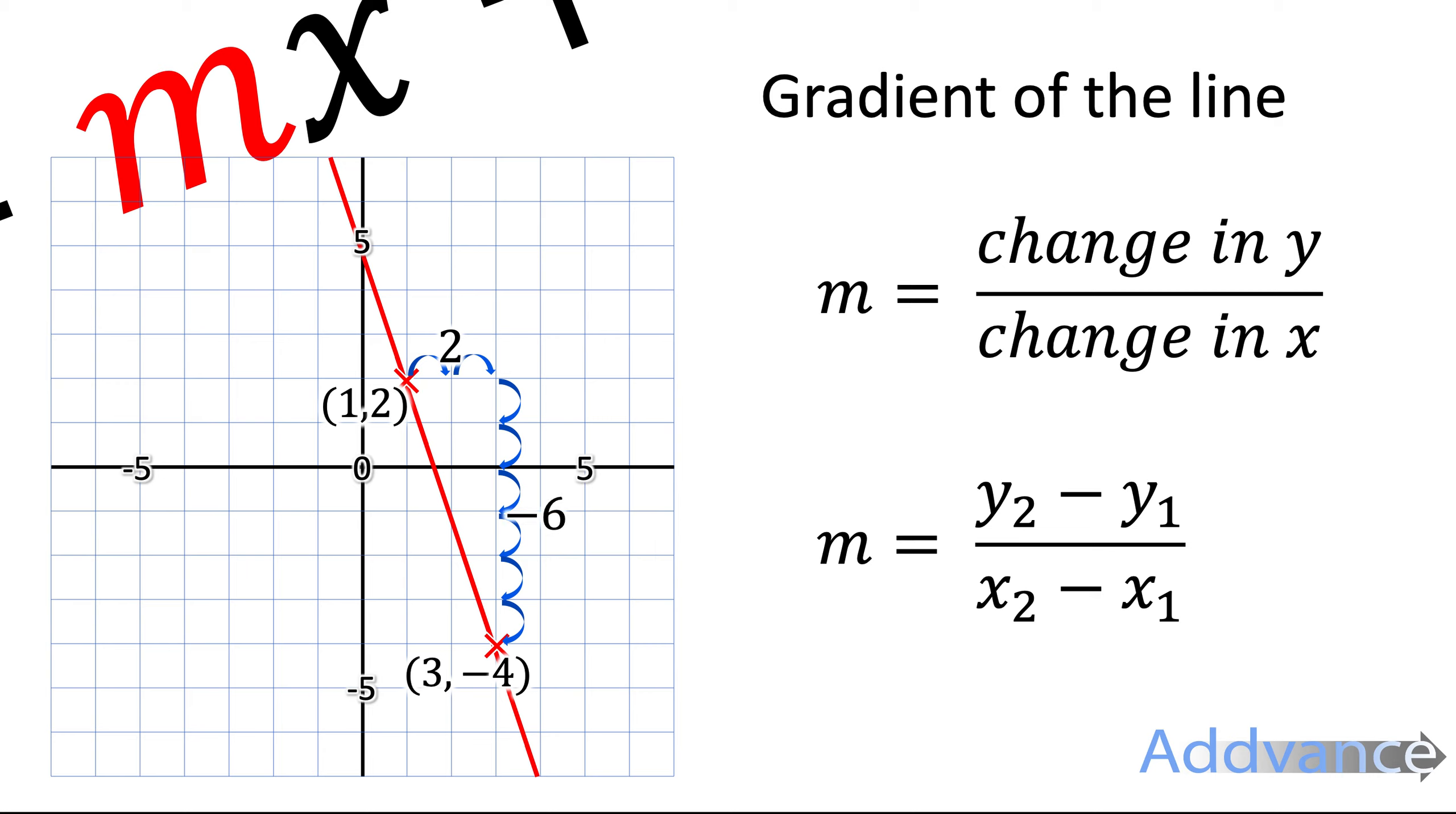So we do the change in y divided by the change in x, minus 6 divided by 2. Minus 6 divided by 2 will be minus 3, and so the gradient of this line is minus 3.